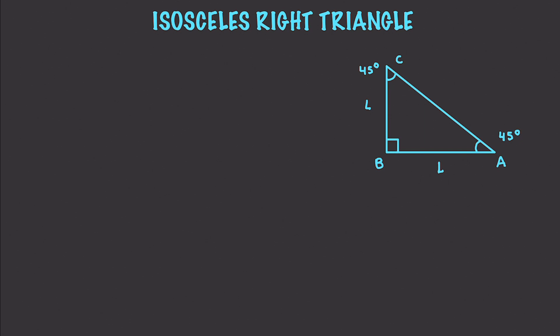We'll mark the hypotenuse as H. We know that angle B, which is 90, plus angle C, which is 45, plus angle A, which is also 45, equals 180 degrees, or pi radians.